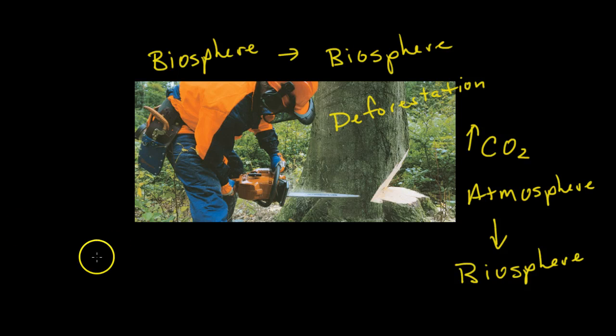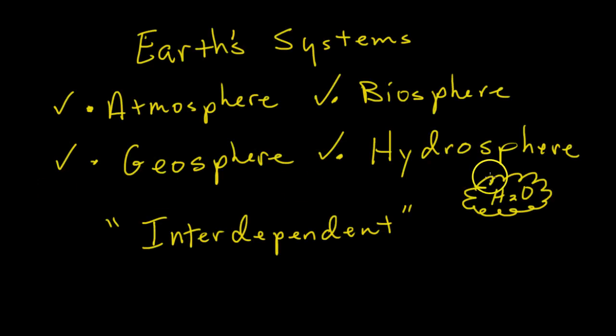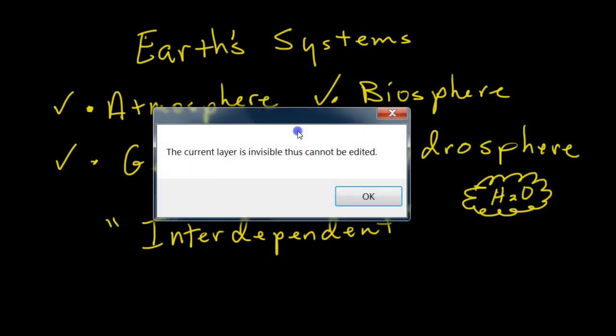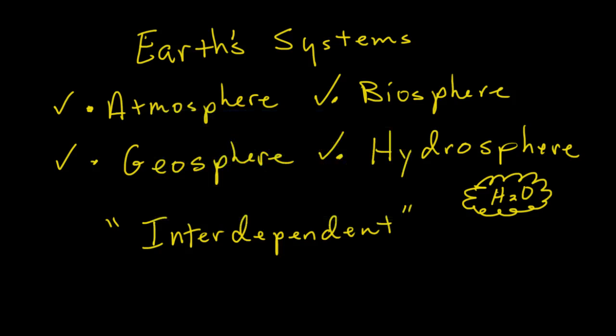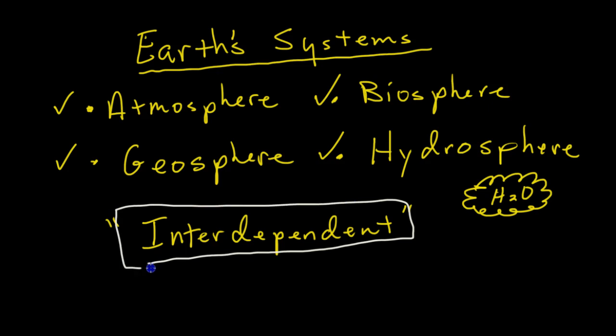All right, so those are all my examples. We'll cut it right now. It's actually kind of longer than I thought. So, again, Earth systems, atmosphere, biosphere, geosphere, hydrosphere, they are all interdependent, and they will affect and change one another. All right, thanks. See you on the next one.